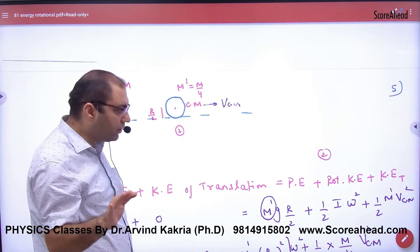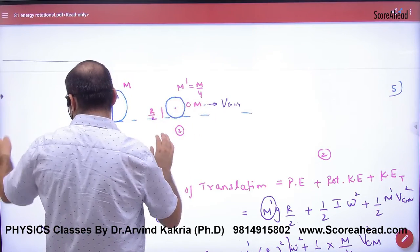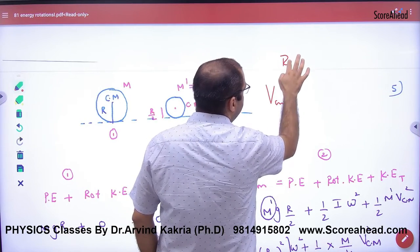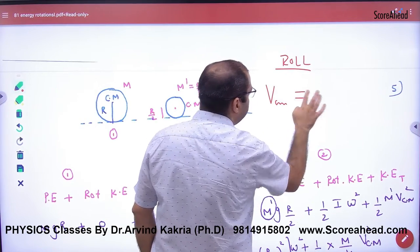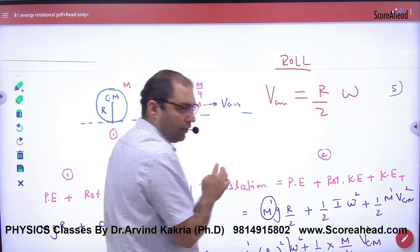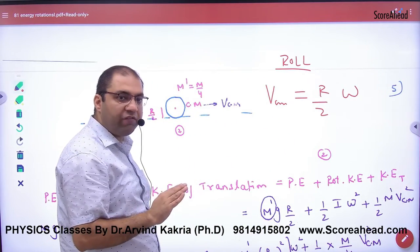So when you solve this question, because you have to find V center of mass. In rolling, this cylinder is rolling. In rolling, V center of mass is equal to R by 2 × ω. That's the formula. V is equal to R ω.